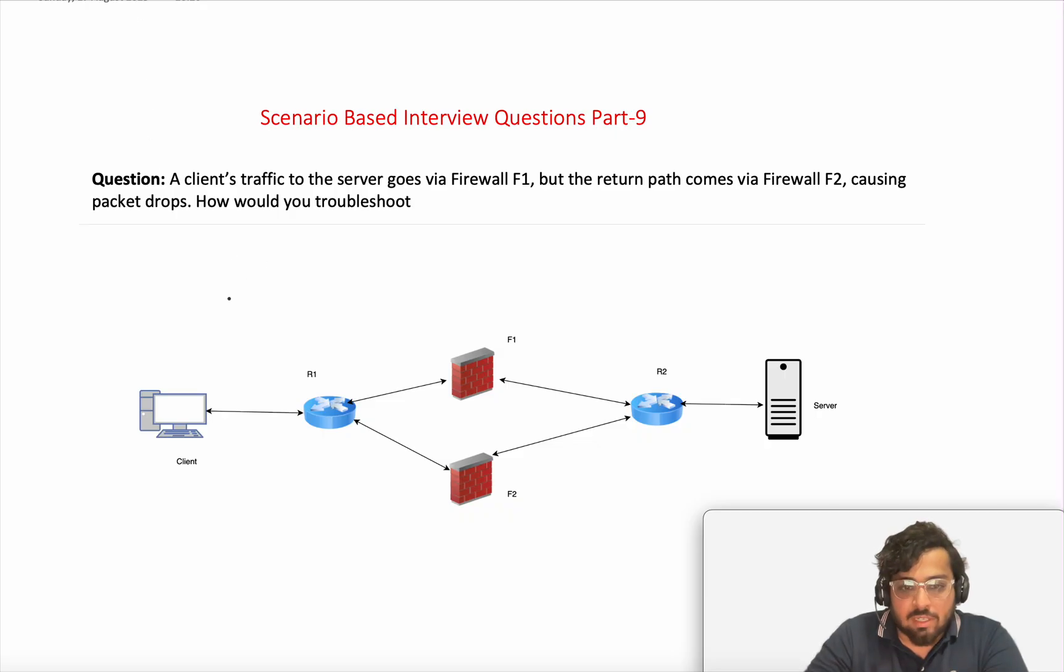So what we can say is, if a client is sending packets from this client, trying to fetch something from the server, it's sending packets through F1, correct? But when you look at it, the return traffic from the server comes via F2. Now because of this, it is causing packet drops.